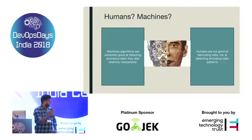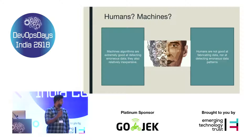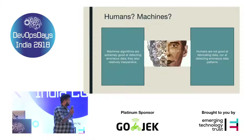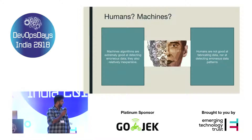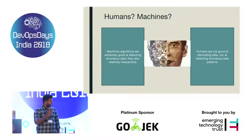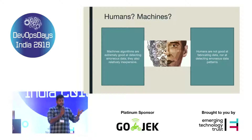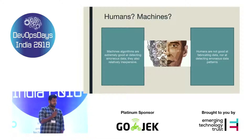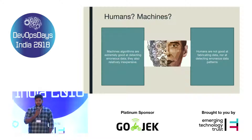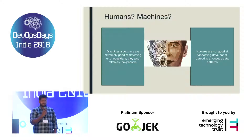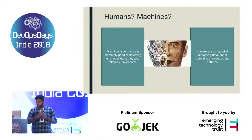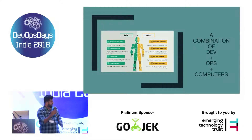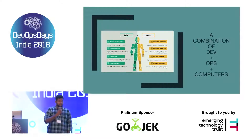Machines are good with algorithms and we are not. Machines are good with relating data and we are not. We are bad at detecting patterns in enormous data. The combination of both humans and machines is really what DevOps is.